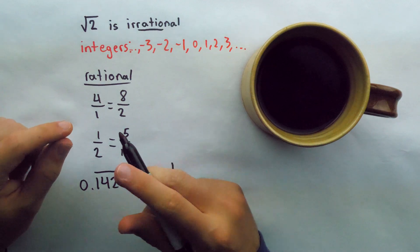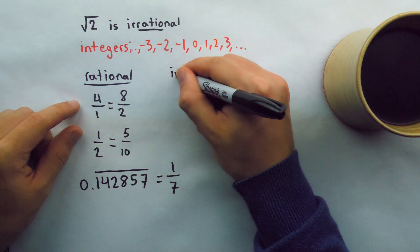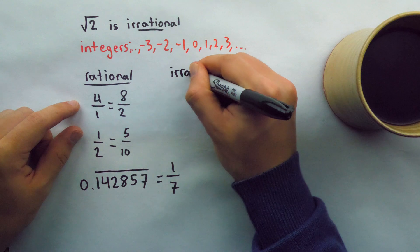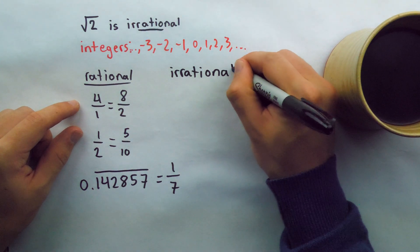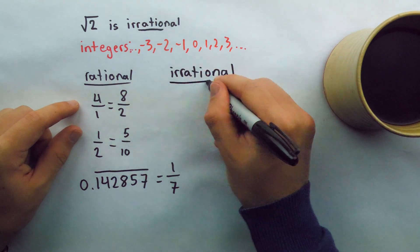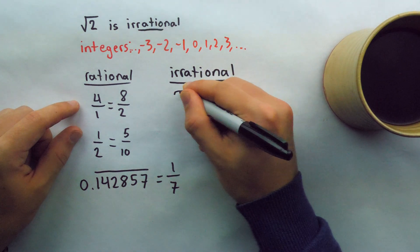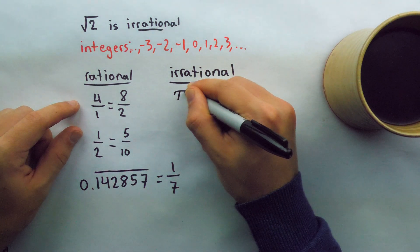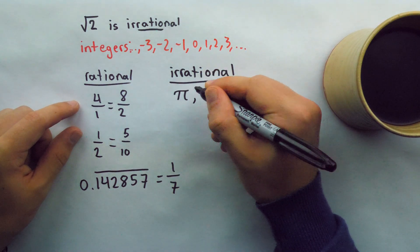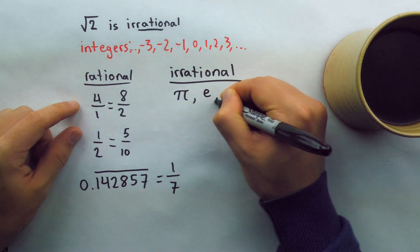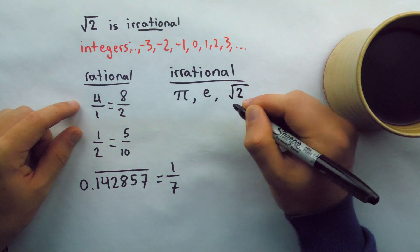Another example of a rational number is 0.142857 repeating — this repeating decimal can be written as 1 over 7, so indeed it's a rational number. Now, what are some irrational numbers? Well, as we'll see today, root 2 is one of them, and among the most famous irrational numbers is pi. Another famous one is e, and of course the one we're focused on today is the square root of 2.